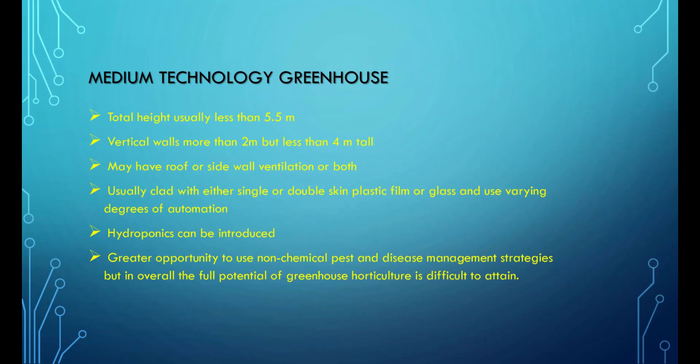Medium-technology greenhouses have a total height usually less than 5.5 meters, vertical walls more than 2 meters but less than 4 meters tall, and may have roof or side wall ventilation or both. They are usually clad with either single or double-skin plastic film or glass and use varying degrees of automation. Hydroponics can be introduced, offering greater opportunity to use non-chemical pest and disease management strategies, but the full potential of greenhouse horticulture is difficult to attain.